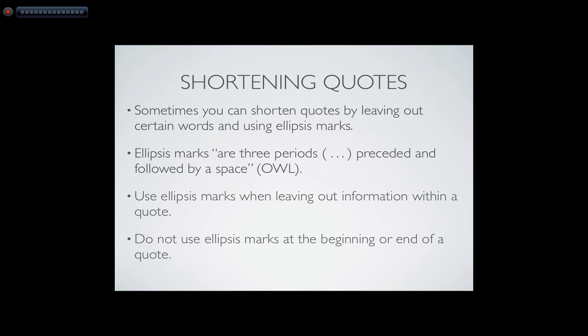Sometimes you're going to come across quotes that have really good information, but there's some things in the quote that you might want to leave out. That information might be distracting or not relevant to your key point. So you can shorten the quote to make it fit the context of your sentence. Obviously you can't manipulate your source into saying something that he or she is not really trying to say, and the quote will have to make sense to the reader with those missing words. But when you want to leave out words, you can do so by using what are known as ellipsis marks.